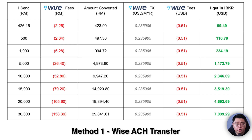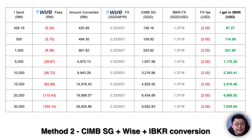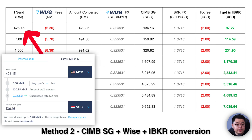I've tabulated a list of transfer amounts ranging from 500 to 30,000 ringgit. Thanks to Wise's transparent fee structure, you can see we are paying around 0.53% when funding the Wise USD balance, plus a fixed fee of 51 cents when sending to Interactive Brokers. Now let's look at the second table, based on the old CIMB Singapore plus Wise transfer method. This transfer is a little more complicated as it involves double conversion.